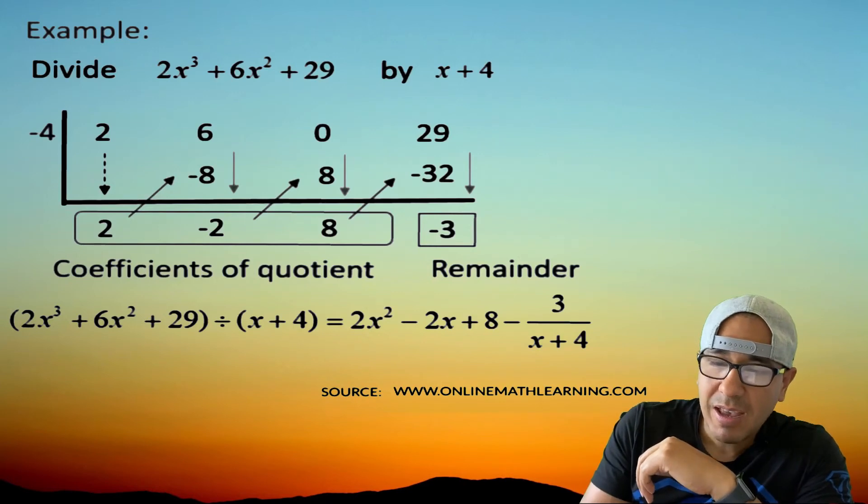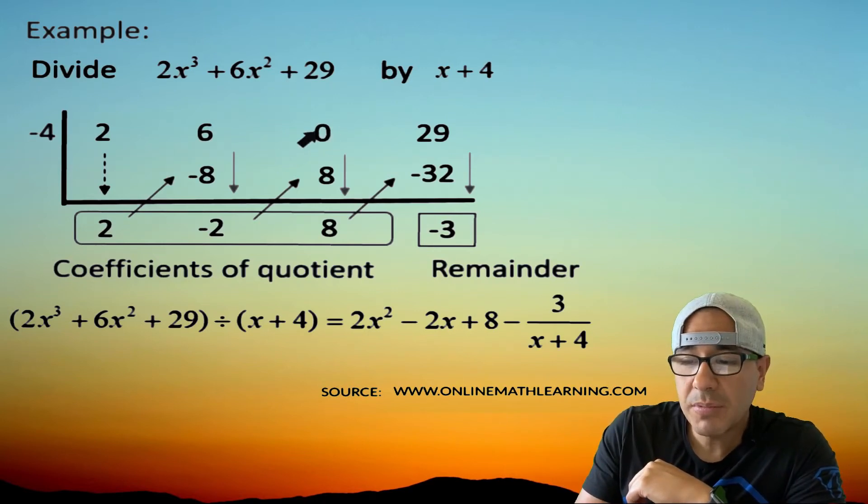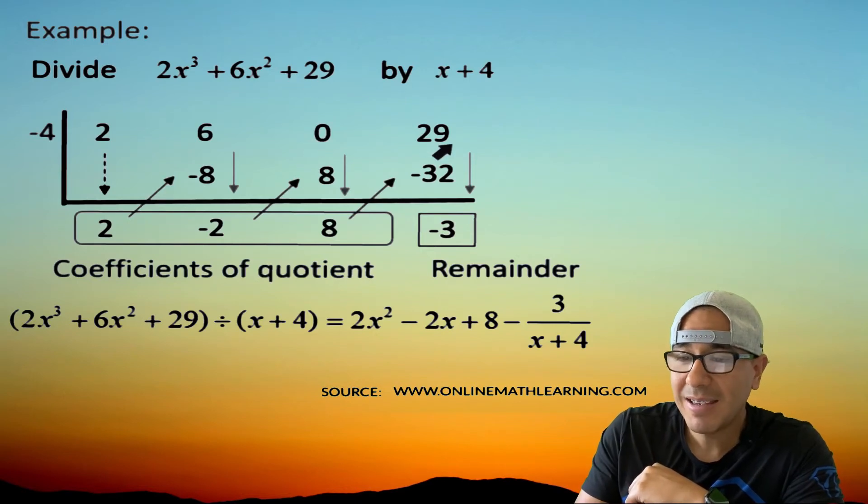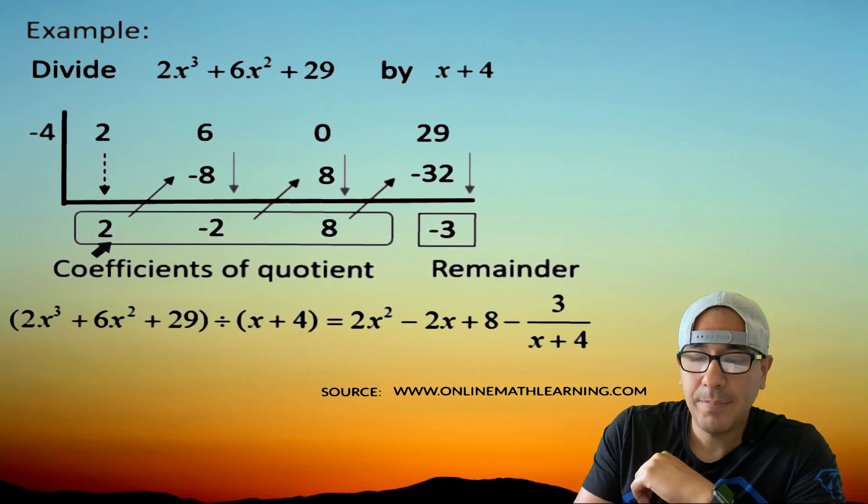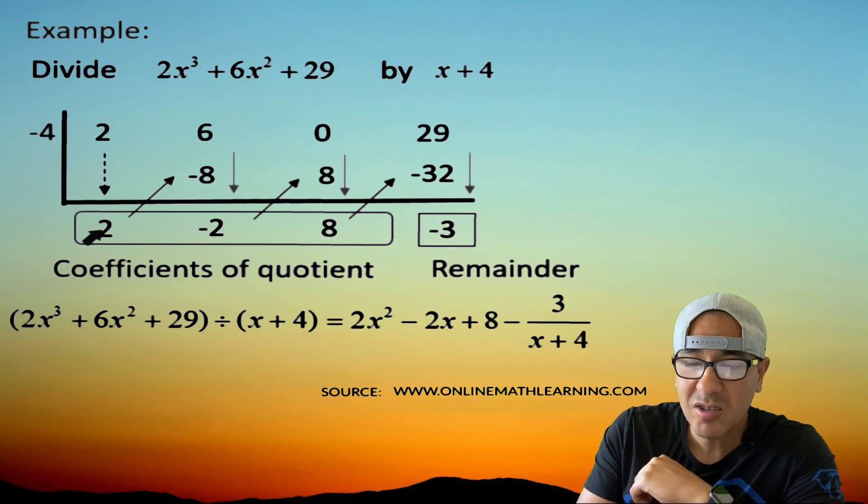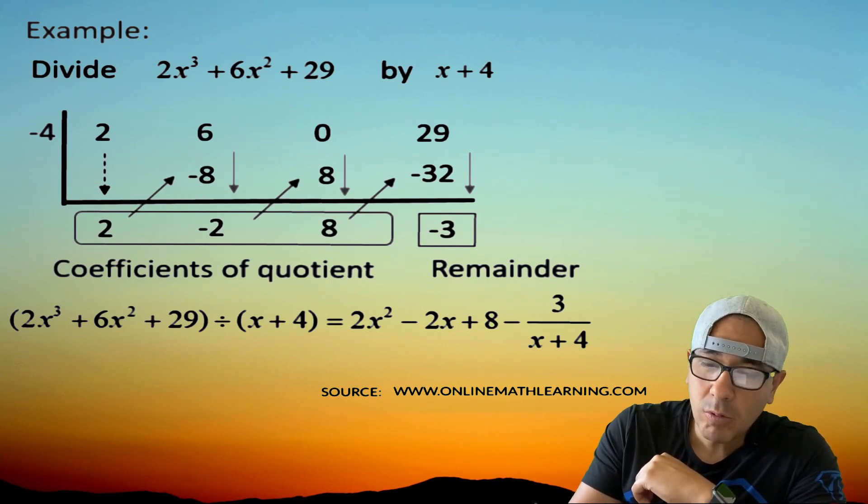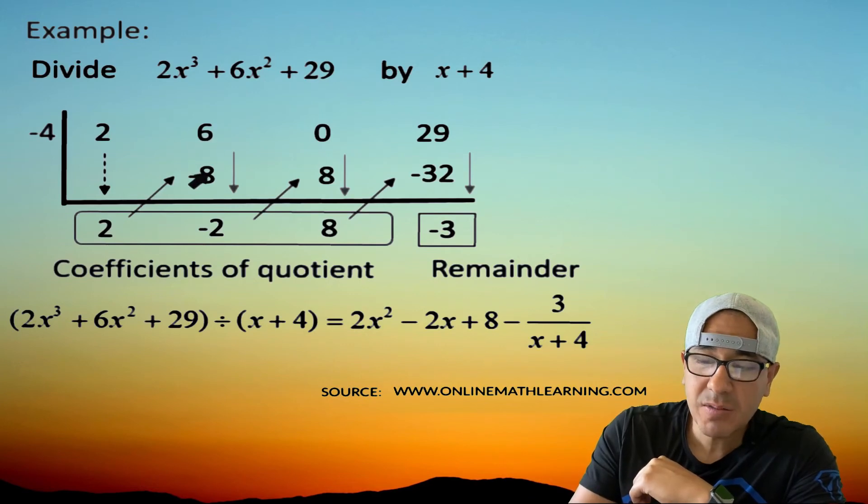Alright, so here's our coefficients. And so what we do is that 2, we have it here. The 6, we have it here. Notice there is no x value. So whenever there's something missing, we put a zero placeholder. And that 29 is right here. Alright, so here's what happened. The 2, we dropped it like it's hot. So there it goes. What do we do with the 2? We multiply it by this negative 4. So you multiply these two, and you get negative 4 times 2, which is negative 8. And that's what goes right here. Well, what do I do with these two? We add them. So these are always added. Write that down. And so 6 + (−8) is −2.